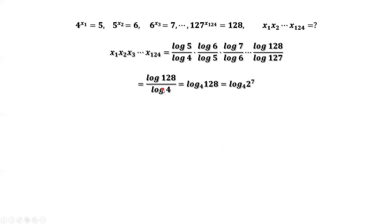We use the change of base formula again for this ratio. This is log of 128 to the base 4. Since 128 equals 2 to the power 7, and 2 equals 4 to the power of one half, therefore this equals log of 4 to the power of 7 over 2, to the base 4. We can bring 7 halves in front of the log function. Log of 4 to the base 4 equals 1. Therefore, 7 over 2 is the answer for the product of x1, x2, x3, until x124.